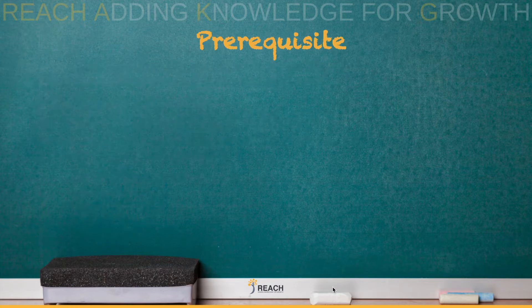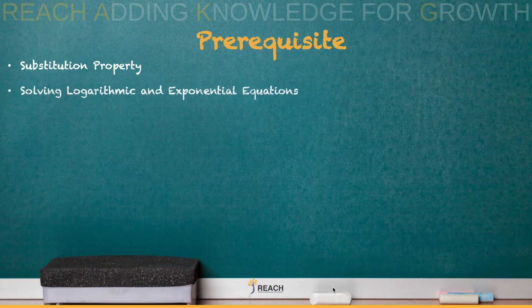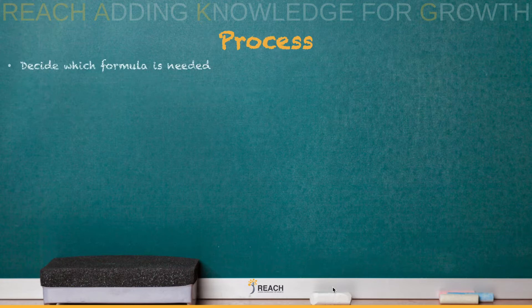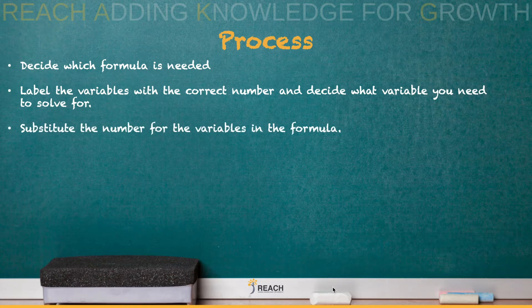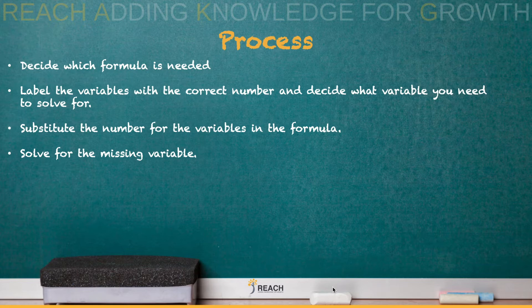Time is always measured in years. Prior knowledge needed includes knowing how to use the substitution property, solving logarithmic and exponential equations — we did a video on that, go check it out — and understanding simple interest, which was the last video we did. To apply the process: decide which formula is needed, label the variables with the correct numbers and decide what variable you need to solve for, then substitute and solve for the missing variable. In summary, just use the formula, plug in, and solve for the variable.